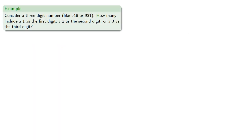For example, consider a three-digit number. How many include 1 as the first digit, 2 as the second digit, or 3 as the third digit?